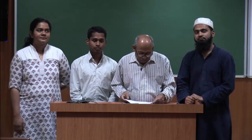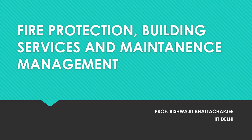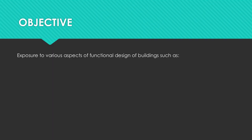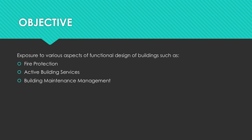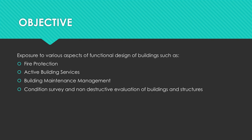Welcome to the course on Fire Protection, Building Services and Maintenance Management. The objective of this course is to expose students to various aspects of functional design like fire protection, active service systems in the building, building maintenance management, condition survey, and non-destructive evaluation of buildings and structures.